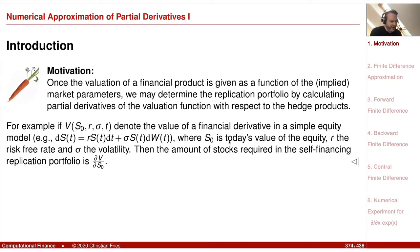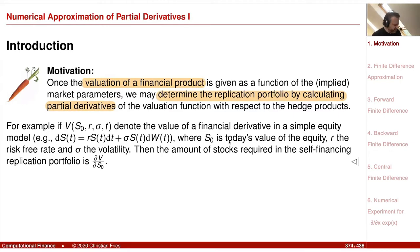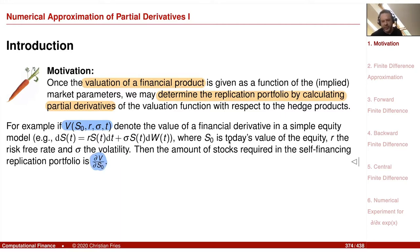If you have the valuation of some financial product, you may determine the replication portfolio by calculating partial derivatives of your valuation function with respect to some hedge products. For example, if a model gives you the value in terms of parameters — with S0 being the initial value of the stochastic process — then dV/dS0 is the number of stocks you should buy to hedge this derivative.